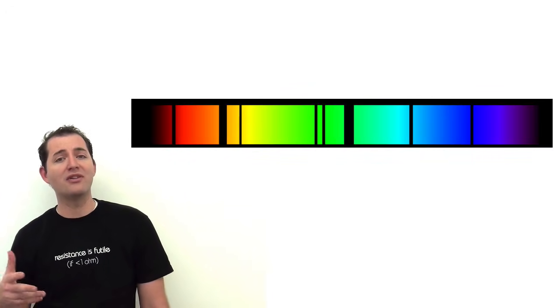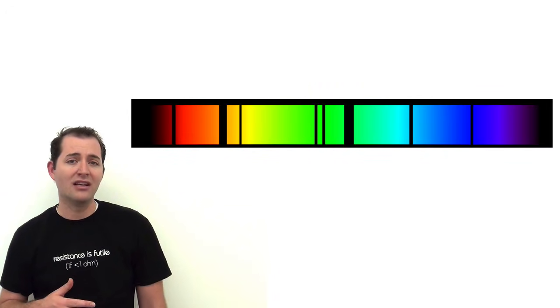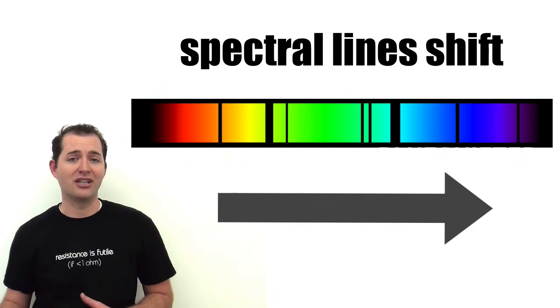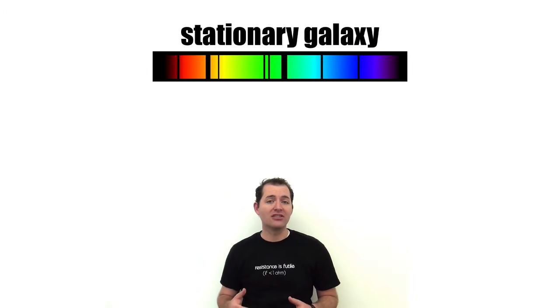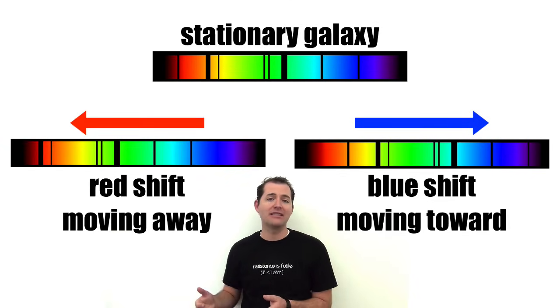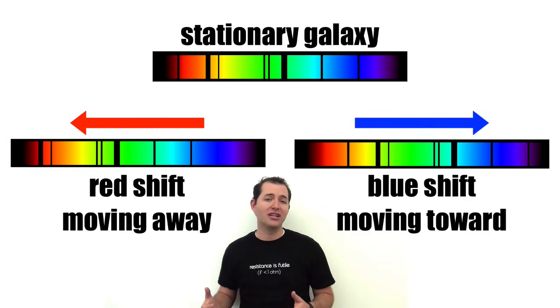Just as the apparent frequency of the car changes as it is moving toward or away from the observer, the apparent frequency of the light coming from a star also shifts. The light of a star will either shift to the blue side of the spectrum if it's moving towards the observer or to the red side of the spectrum if it's moving away from the observer, hence the term redshift.